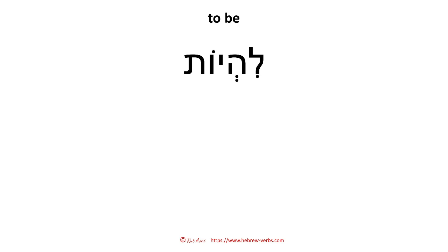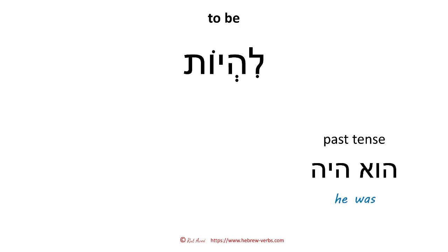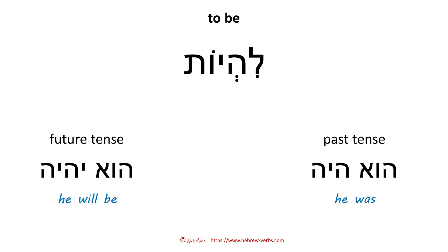To be — lehijot. We have it in the past tense: hu-ha-ya, he was. We have it in the future tense: hu-yi-ye, he will be. And the present tense? Well, nothing. Nothing.